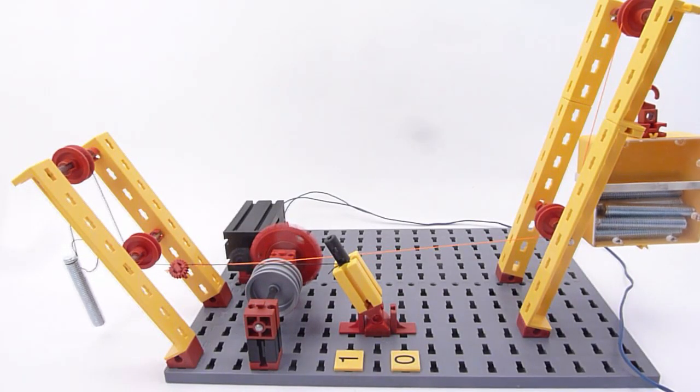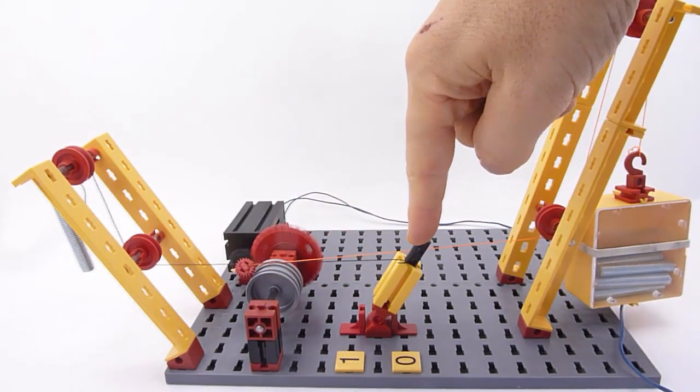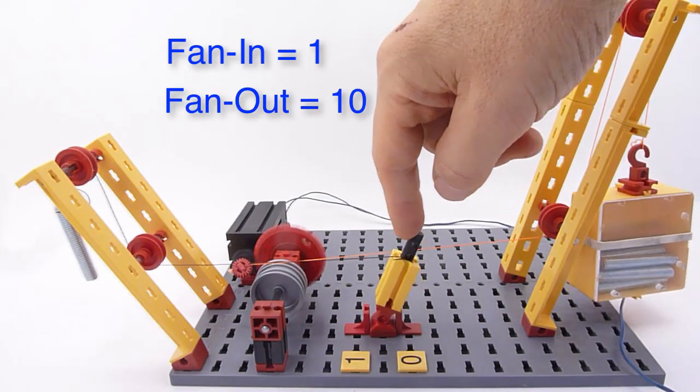In terms of electronic TTL logic, we say that this inverter gate has a fan in of 1 and a fan out of 10.